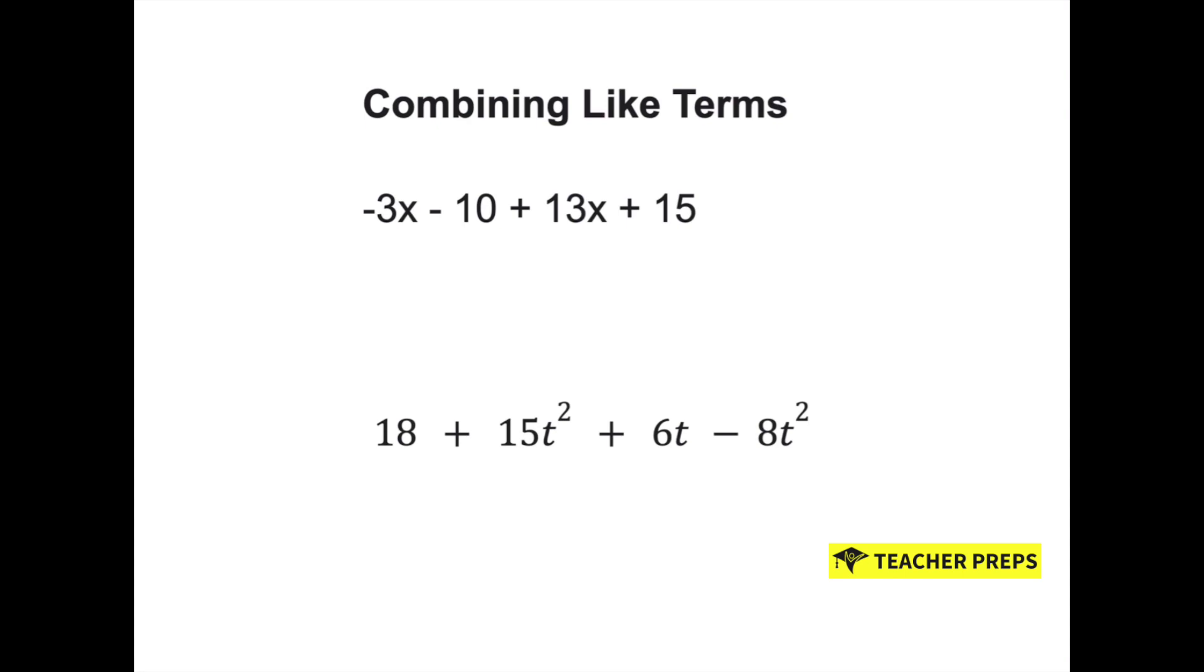The first thing I like to do is start with the variables and box the like terms. So we have a negative 3x and we have a positive 13x. Remember, include the sign that is in front of the number. So a negative 3 and a positive 13 makes a positive 10x.